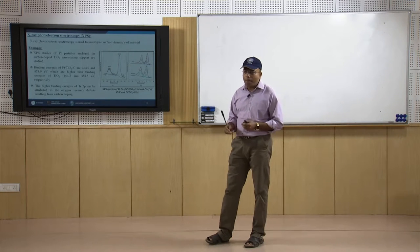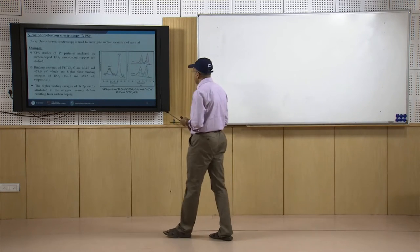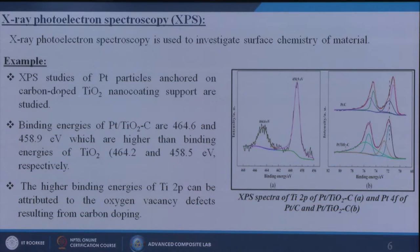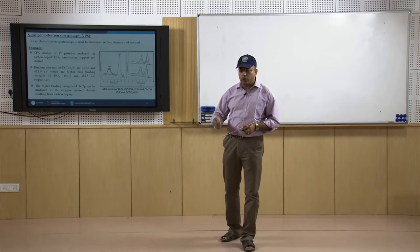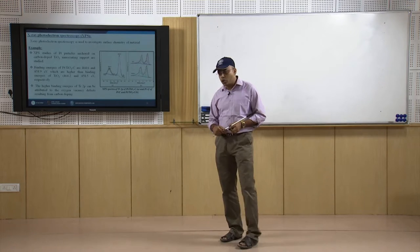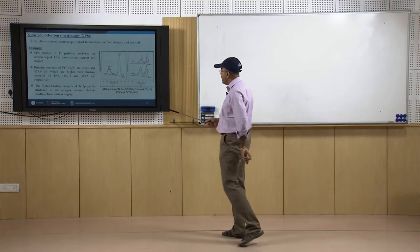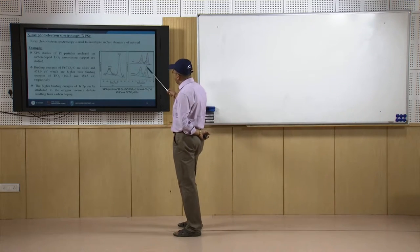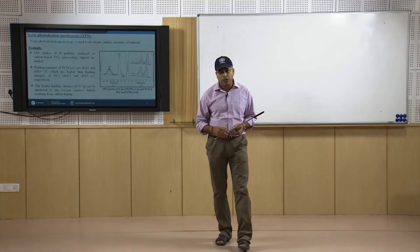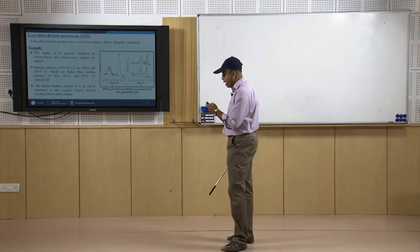XPS studies can be done before and after coating, and from the two results we can compare what the chemical structure of the material was before coating and after coating. It will give information about carbon, oxygen, nitrogen, and other materials. By getting the intensity and binding energy, we can calculate the percentage of material attached and the chemical structure forming inside the material.